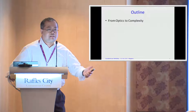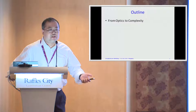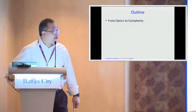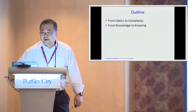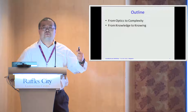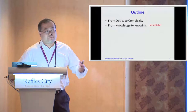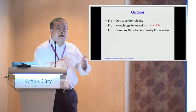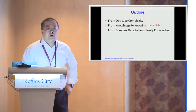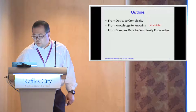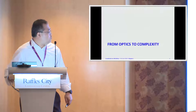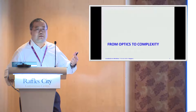I will talk about how we go from knowledge to knowing — this sounds like the wrong direction, but I assure you it is no mistake, and I'll explain why. Finally, I will summarize with an outline of how you go from complex data to complexity knowledge, hopefully through some kind of complexity lens. Let me start from the first part: how you go from optics to complexity, drawing an analogy between the two.